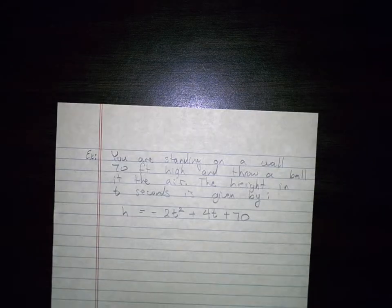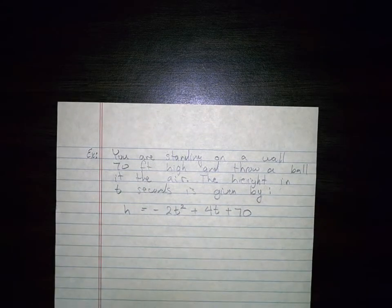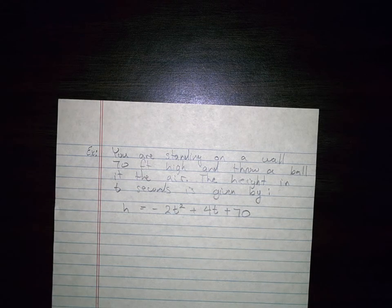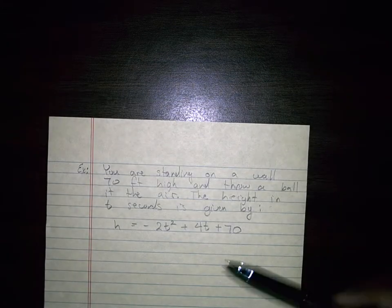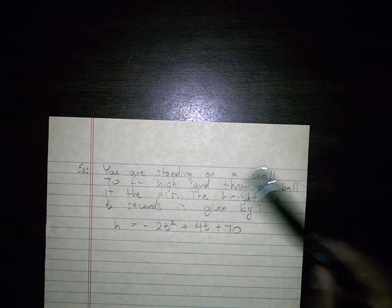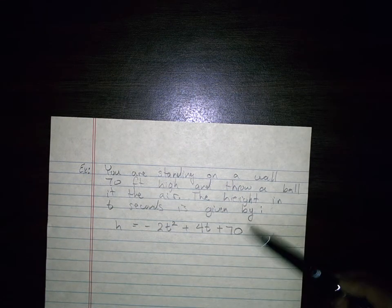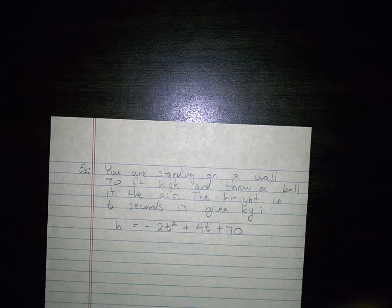So now in this case, it says you are standing on a wall 70 feet high and throw a ball into the air. The height in t seconds is given by h equals negative 2t squared plus 4t plus 70. So it's the exact same type of question, but we're standing 70 feet on a wall. So you can see the formula looks a little bit different. You can see kind of where the 70 comes in. But same thing, find the vertex, find the intercept. The process remains the same.